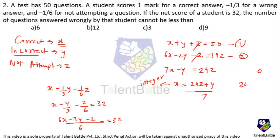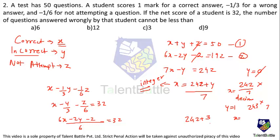If y equals 0: 242 is not divisible by 7, so x would be a decimal — not possible. If y equals 1: 243 is not divisible by 7 — not possible. If y equals 2: 244 divided by 7 is also not divisible — not possible. If y equals 3: 242 plus 3 equals 245, which is divisible by 7. So the least possible value of y is 3. The number of questions answered wrongly cannot be less than 3. The answer is C.